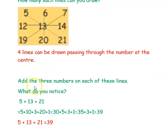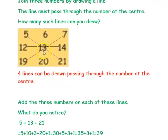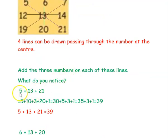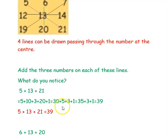The next question to find the magic is: add the three numbers on each of these lines — what do you notice? The first line passes through 5, 13, and 21. So we add 5 plus 13 plus 21. Writing 13 as 10 plus 3, and 21 as 20 plus 1, we get 10 plus 20 is 30, plus 5 plus 3 plus 1 gives 39. So 5 plus 13 plus 21 equals 39.